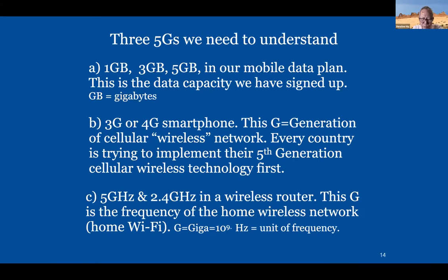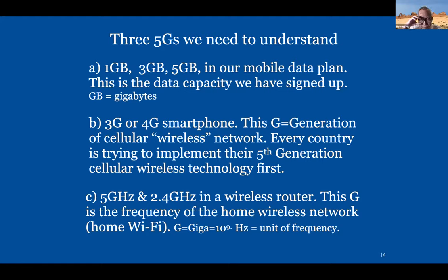Every router broadcasts two frequencies: 5GHz and 2.4GHz. The higher the frequency, the stronger the signal, but the shorter the reach. So 5GHz means strong signal but short reach. 2.4GHz has lesser signal strength but a wider reach. So if your iPhone is in the remote area of your house having trouble, it's good to force it to use 2.4GHz and you will get better reception.